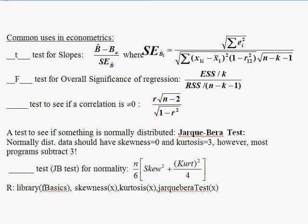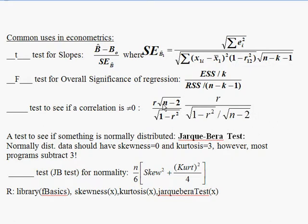Here's one that's less familiar to most people: a test to see if a correlation is not equal to zero. The null hypothesis is that the population correlation equals zero, and the alternate hypothesis is that it's not equal to zero. Pause the video, look back at those formulas, and see if you can figure out what type of test it is. To help, I'll rewrite the formula by moving the square root of n minus 2 to the bottom.